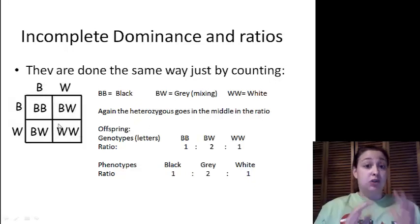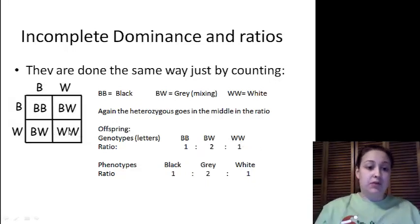Our genotypes, which are our letters. We have a BB, we have a BW, and we have a WW. Underneath I always put the ratios right underneath. How many BBs do we have? We have one. How many BWs do we have? We have two. And then finally how many WWs? When we look over here we have one, which makes it a one to two to one ratio.